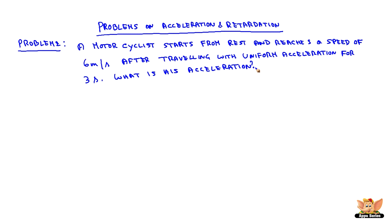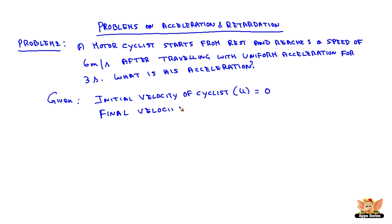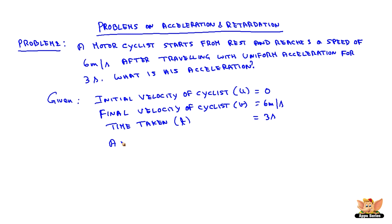Problem 2: A motorcyclist starts from rest and reaches a speed of 6 meters per second after traveling with uniform acceleration for 3 seconds. What is his acceleration? The given parameters: initial velocity of the cyclist u is equal to 0, as he started from rest. Final velocity of the cyclist v is equal to 6 meters per second. To reach 6 meters per second, he took 3 seconds, so the time taken t is 3 seconds.